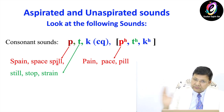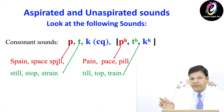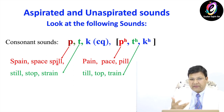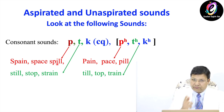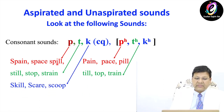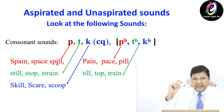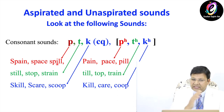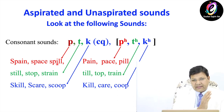On the right side: till, top, train — with extra power, extra air coming from the mouth. The example for K: skill, scare, scope. On the right side: kill, care, coop. The pronunciation is different — this side we are producing Pa, Ta, Ka and this side we are pronouncing Pha, Tha, Kha.